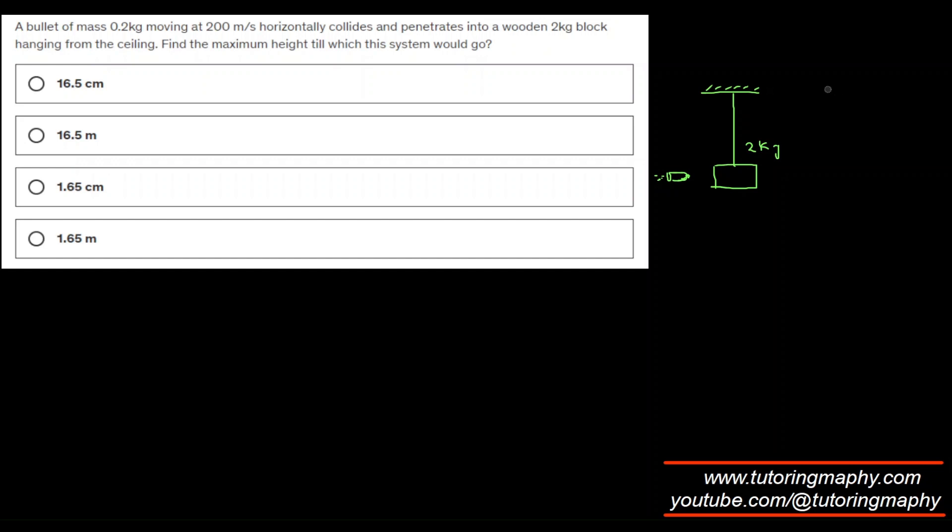After penetration, the block and the bullet become a single unit. This bullet is inside it and this total mass will obviously - this is 0.2 kilogram - so this will become 2.2 kilogram. After the bullet hits the block, this entire system will have a tendency to go up and stop somewhere, and that's what they are interested in: what is this height till which the system goes up and then it stops. Let's say this height is given by h.